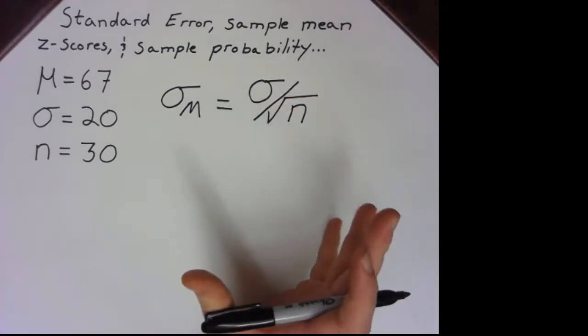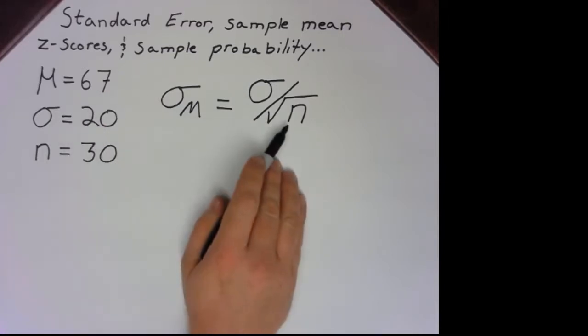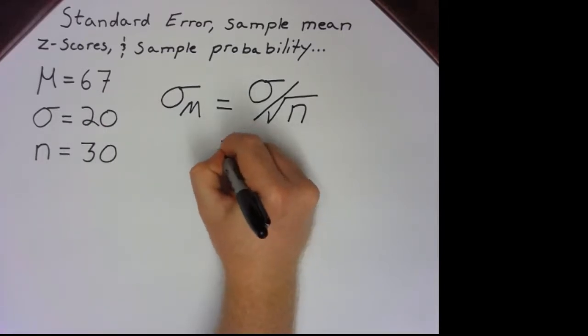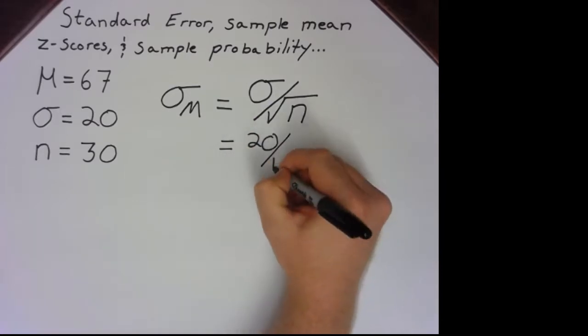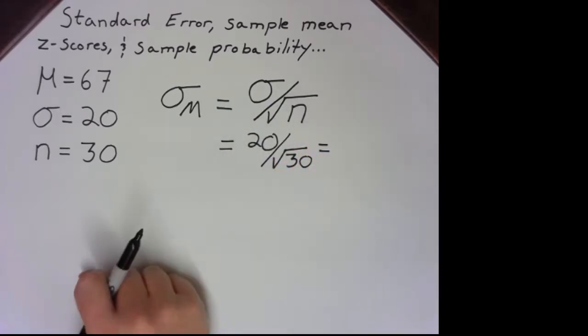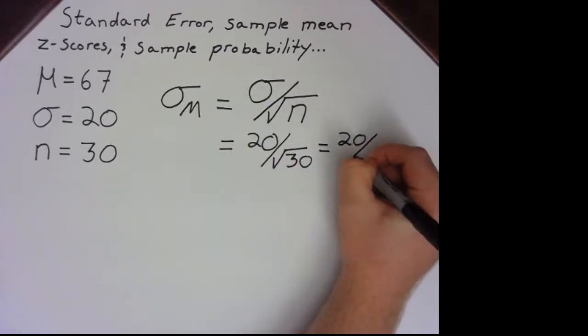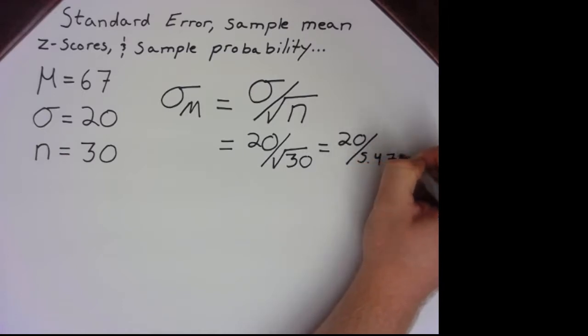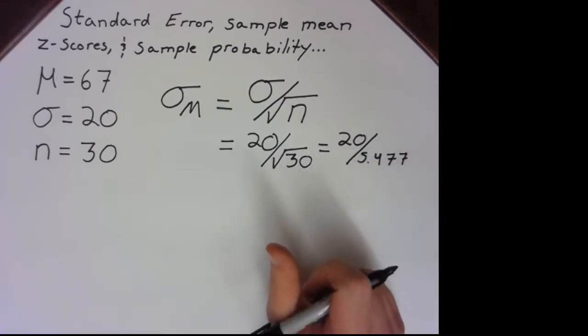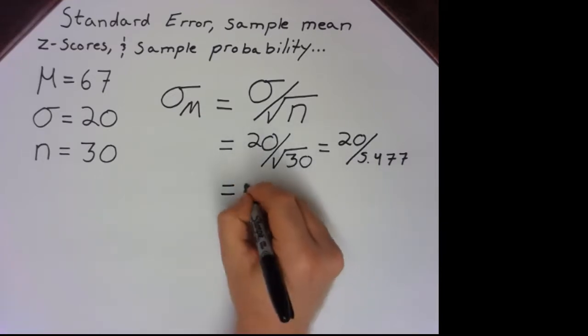We have these values, so we can just sub them in, 20 and 30. So 20 is our population standard deviation, 30 is our sample size. Now we can just solve. The square root of 30 comes to 5.477. So we divide that into 20 to get our final standard error of 3.65.